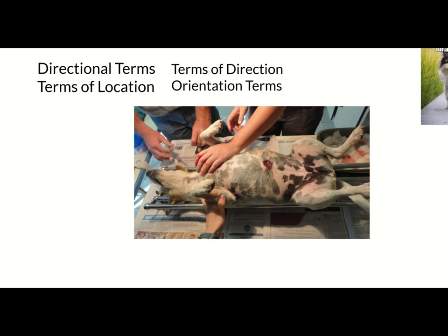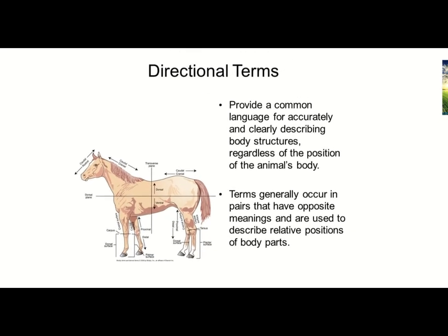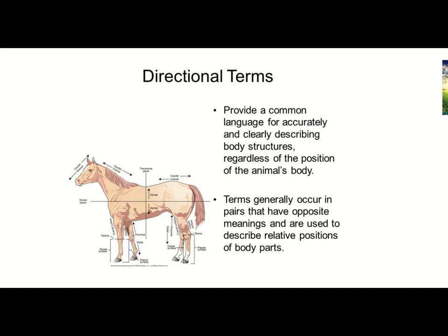These terms apply to all animals no matter what their position is — quadrupeds are our focus. Directional terms provide a common language for accurately and clearly describing body structures regardless of the position of the animal's body. Whether you see an animal walking by or on a surgery table in dorsal recumbency, the terms are all the same. They usually occur in pairs, and those pairs have opposite meanings of each other.